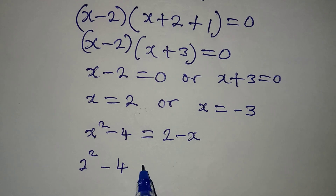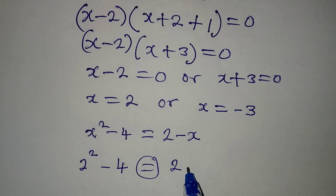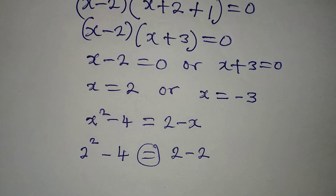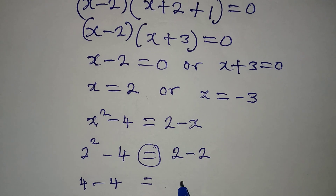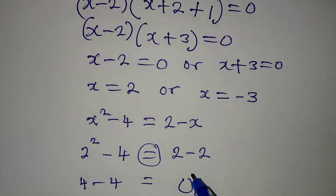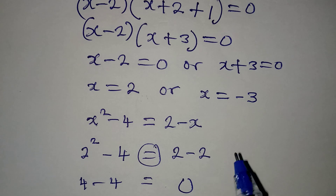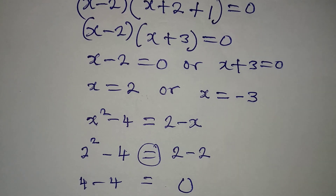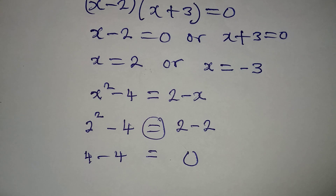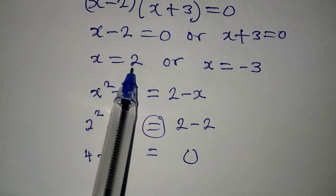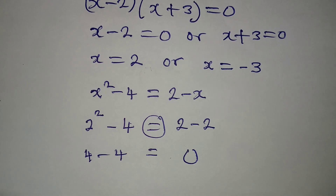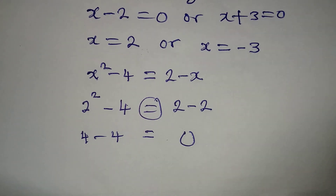On the right hand side we have 2 minus 2, because x is now 2. So on the left we have 4 minus 4, which gives us 0, and on the right we have 2 minus 2, which is also 0. This confirms that the first value of x, which is 2, satisfies the original equation.